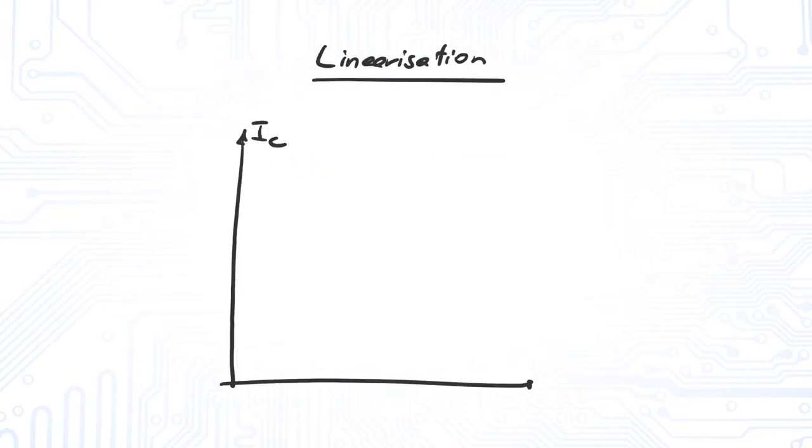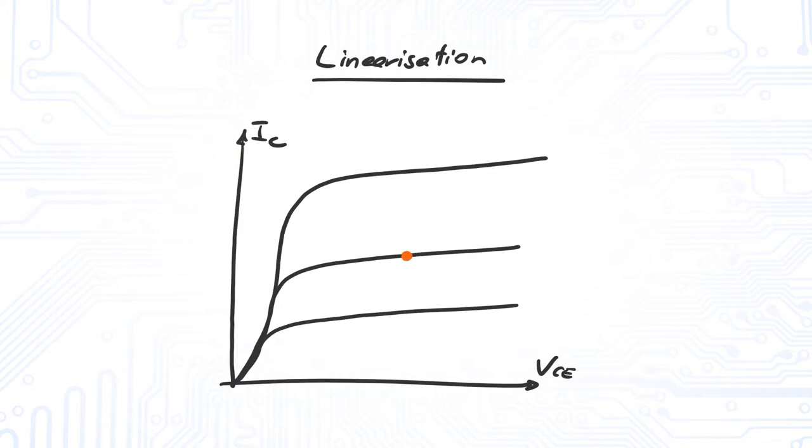The linearization of a transistor is performed around its operating point. If we move around this point just a little, we can replace the non-linear characteristic with a linear function as shown here for the output characteristic.